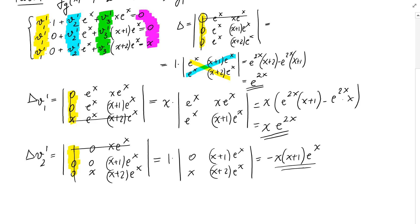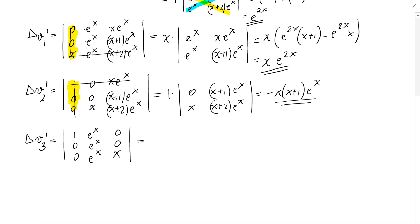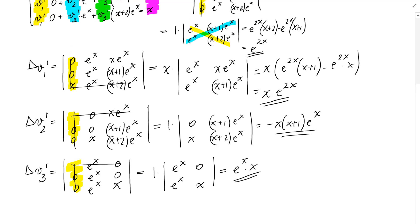For delta_V3', we replace the third column with the right-hand side, giving the matrix 1, 0, 0; e^x, e^x, e^x; and 0, 0, x. Expanding by the first column, we cross out the first row and column, leaving the 2×2 determinant e^x, e^x, 0, x, which gives e^x times x. So delta_V3' equals x e^(2x).